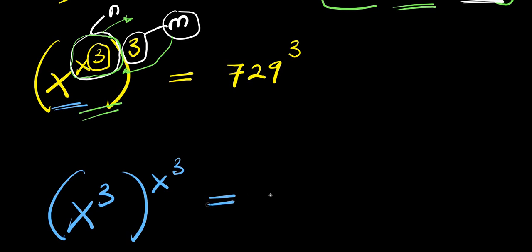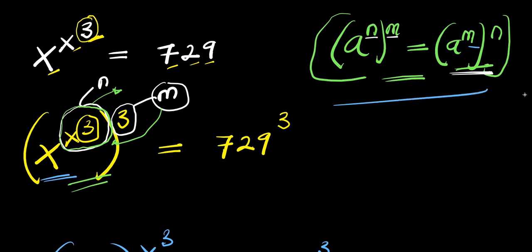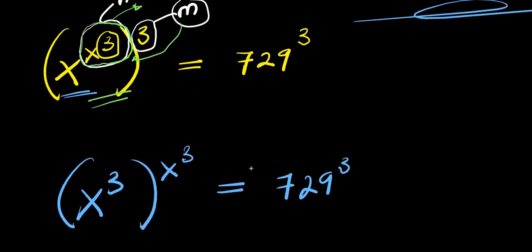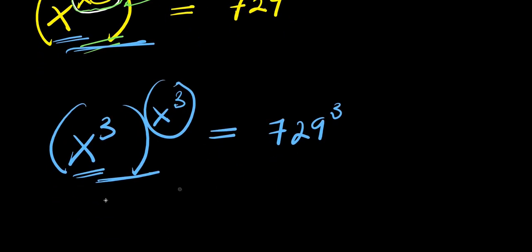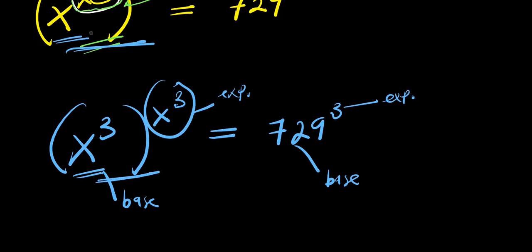This equals 729 to the power of 3. The essence of using this identity was to transform the expression to this form. Now we have x to the power of 3 raised to the power of x to the power of 3, meaning the base is the same as the exponent. However, on the right side, the base is different from the exponent, so we have to ensure they are the same.